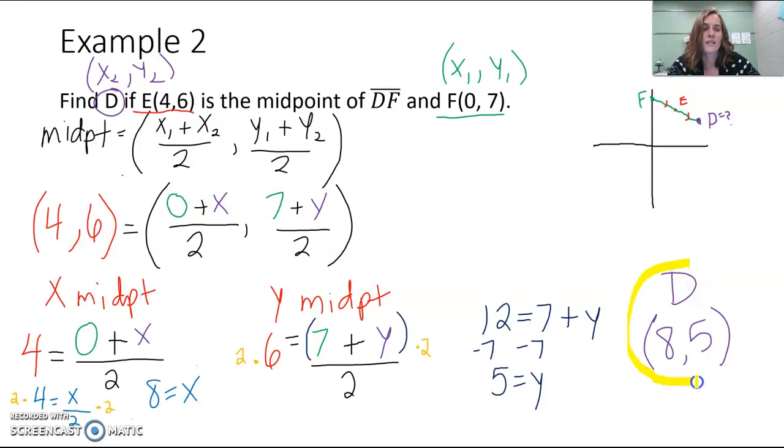But our final answer is the point D has the ordered pair coordinates of (8,5). And again, you could double-check this on Desmos. You could, and if you graph it on there, that visual is going to be a lot better than what we have here. And you can see that, oh, E(4,6) really is the midpoint between (0,7) and (8,5).